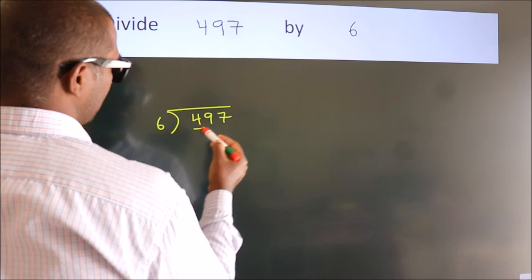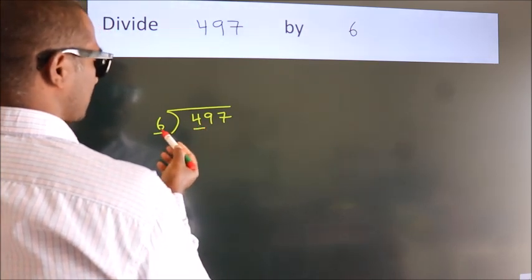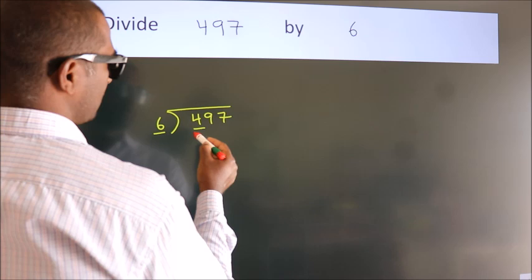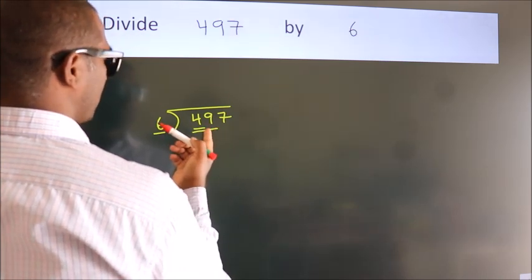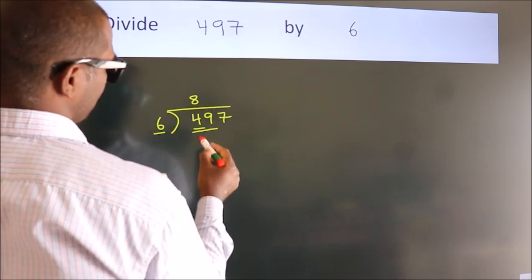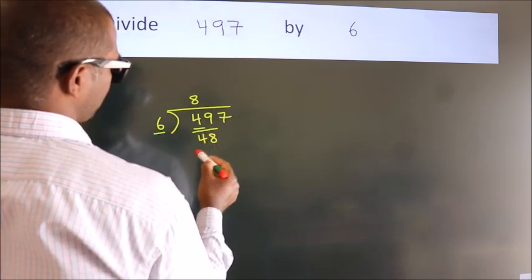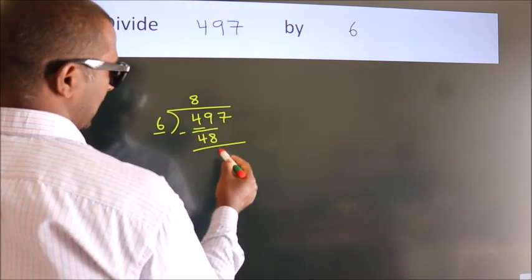Here we have 4. Here 6. 4 is smaller than 6, so we should take two numbers: 49. A number close to 49 in the 6 table is 6 times 8 is 48. Now we should subtract. We get 1.